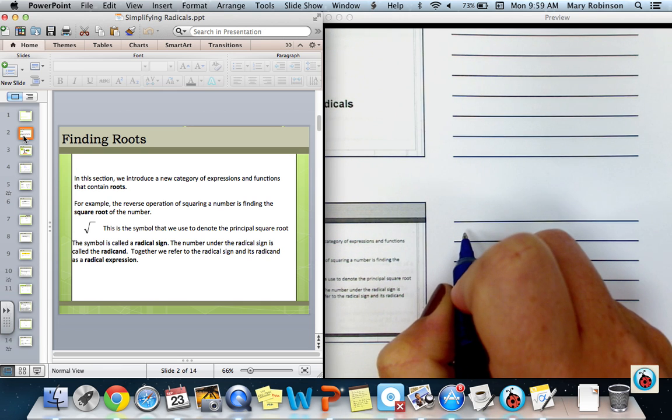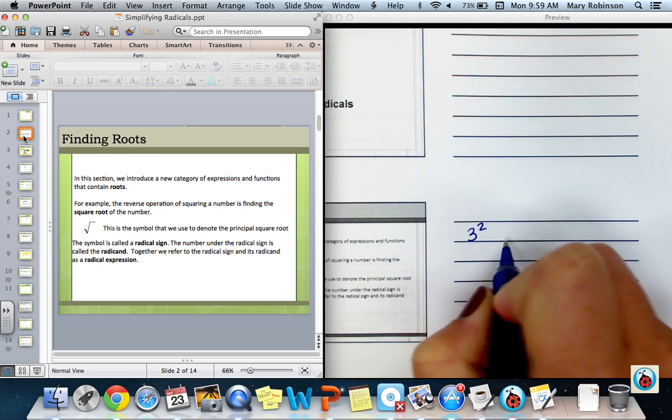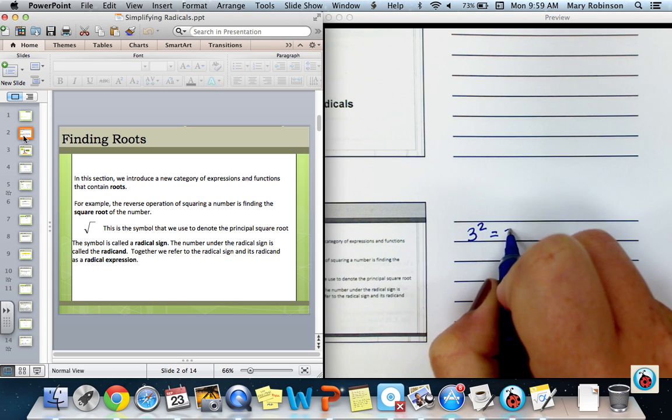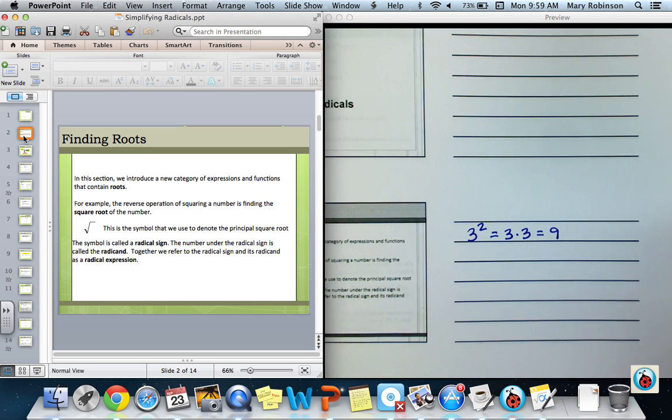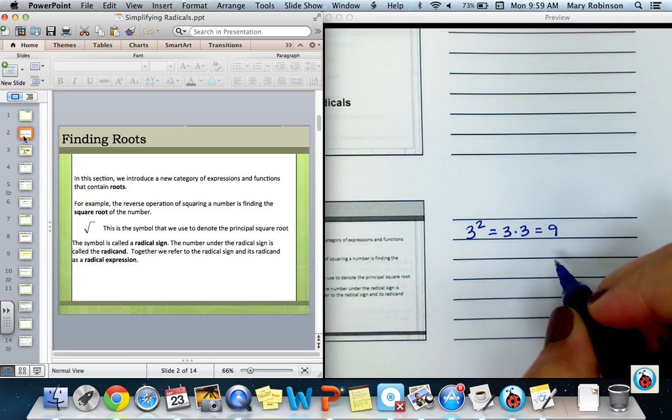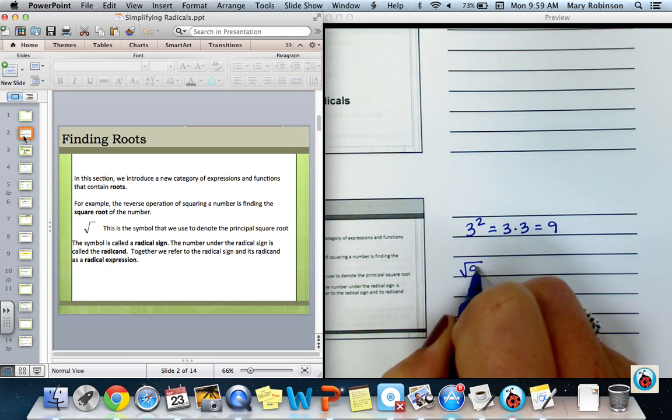If we consider 3 squared, we know that 3 squared is equal to 3 times 3, which is 9.